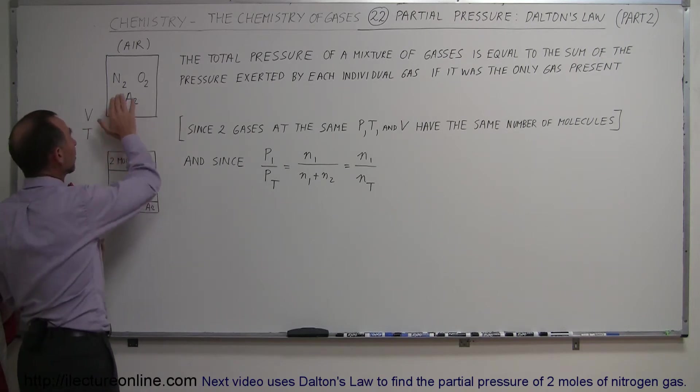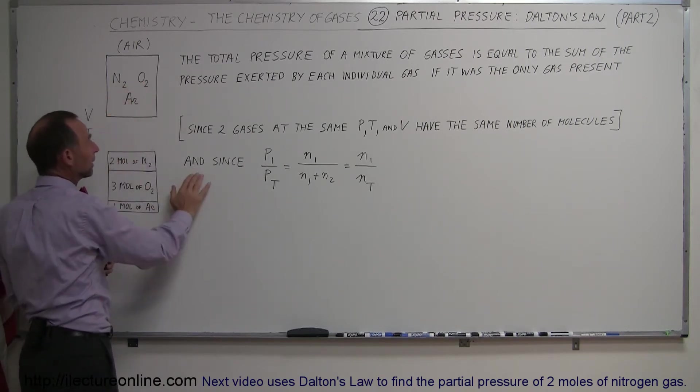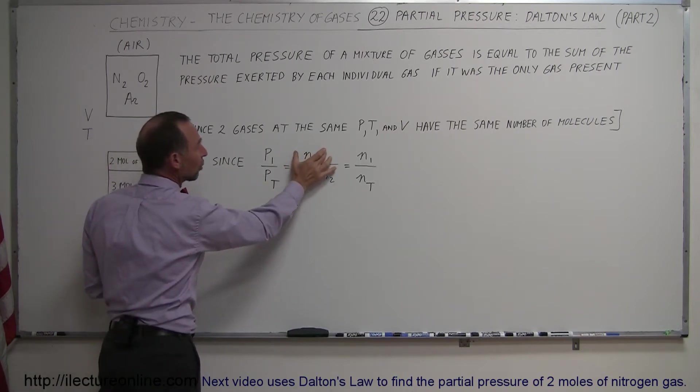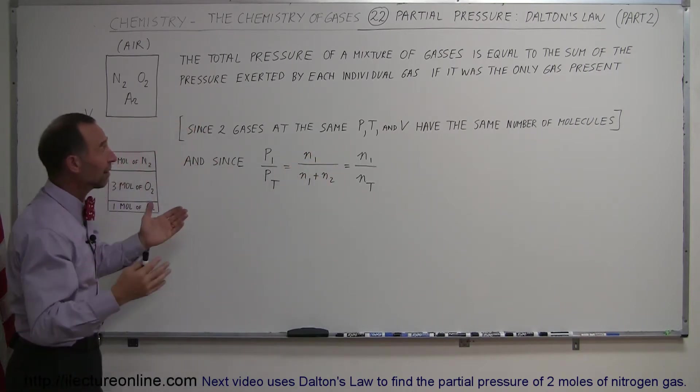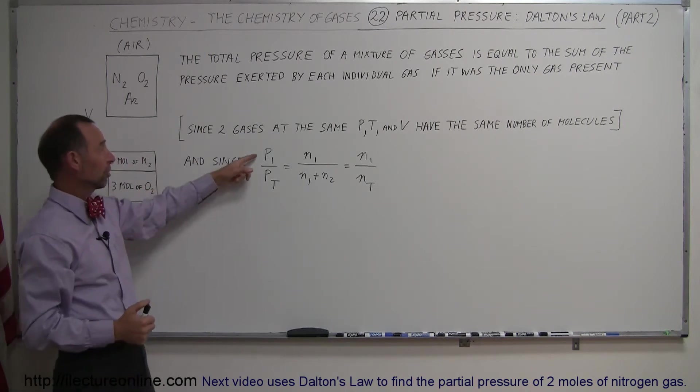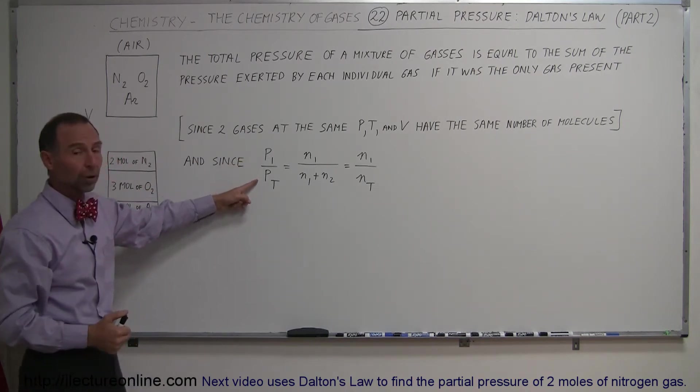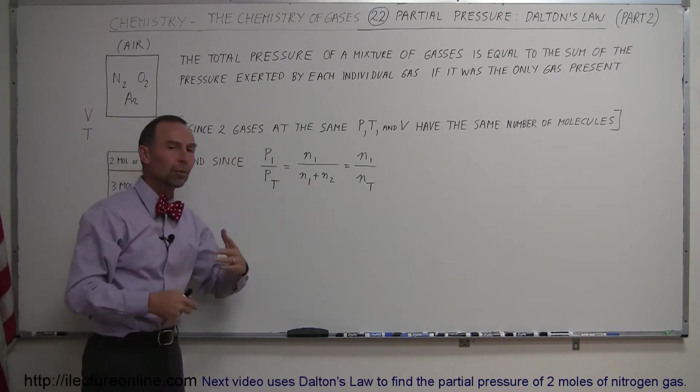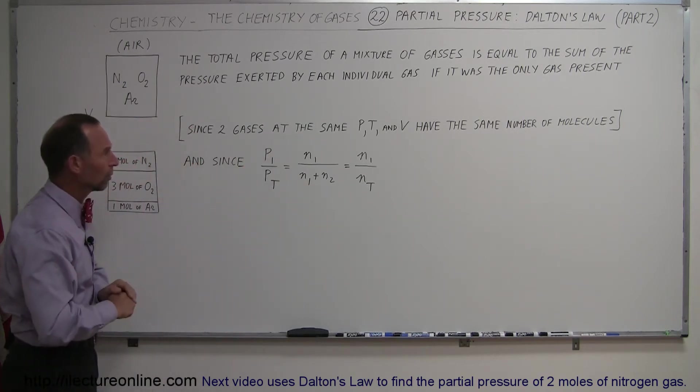And then we've learned also, mathematically, that the partial pressure of each gas can be calculated as simply being the ratio of the number of moles of the gas in question divided by the total number of moles present. So if we have two gases, we can say that the partial pressure of the one gas compared to the total pressure is simply equal to the number of moles of that gas divided by the total number of moles.